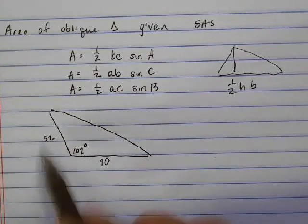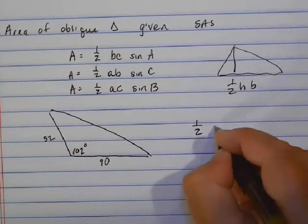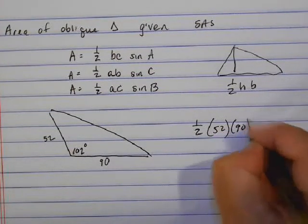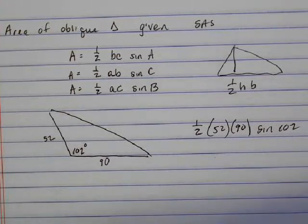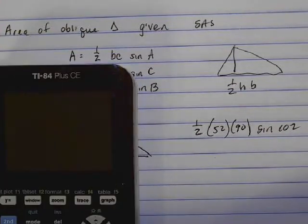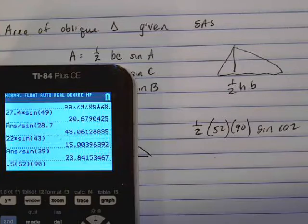If I want to find the area of this triangle, I would do one-half the two sides times sine of the angle between those two. So when I type that in, I have 0.5 times 52 times 90 times sine of 102.